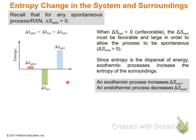An exothermic process increases the delta S of the surroundings, and an endothermic process decreases the delta S of the surroundings. For an exothermic process, you're releasing energy into the surroundings — the randomness increases, energy disperses, so entropy of surroundings increases. For an endothermic process, you're taking in energy from the surrounding, which decreases the delta S of the surrounding.